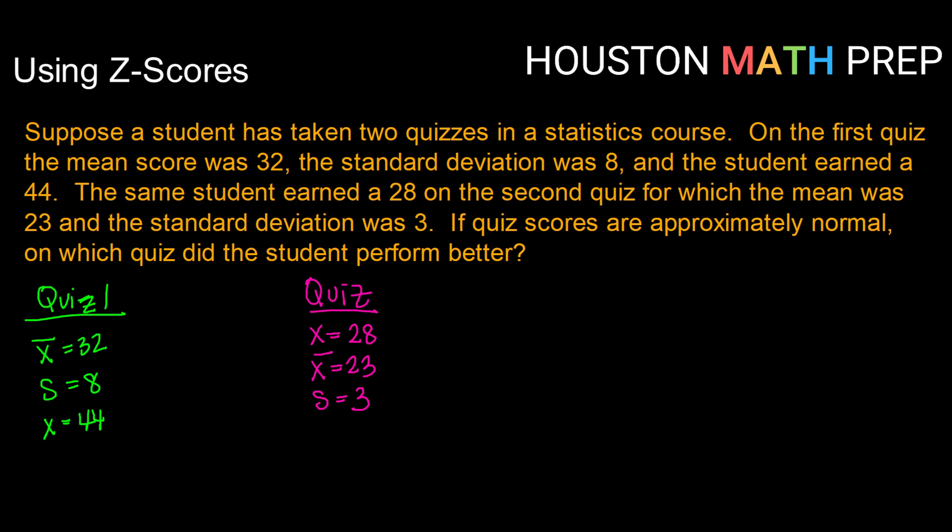So what we want to look at is the z-score for each quiz. A higher z-score will indicate a higher performance. So we'll look at which score did this student have a higher z-score for. Therefore, which one did they perform better on?